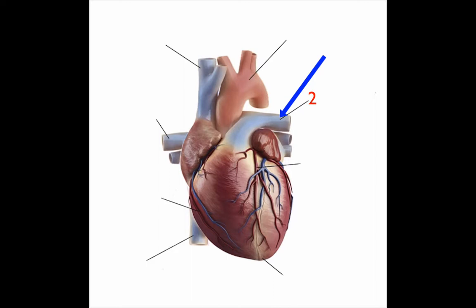Structure number two. Structure number three: this supplies blood to the left side of the heart muscle. What is this structure?